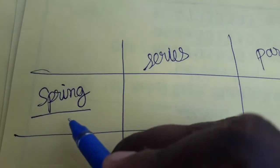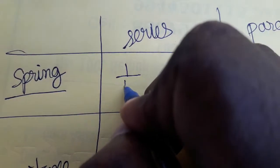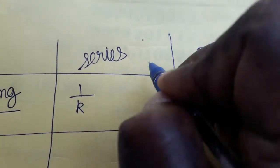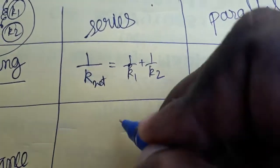In series, how is the spring connected? Two springs are connected in series like this — it is k1 and k2, where k1 and k2 are the spring constants. So the net spring constant value will be: 1/k_total = 1/k1 + 1/k2.